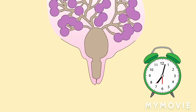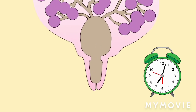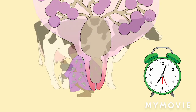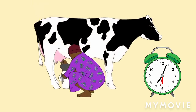The cow eats and relaxes, allowing milking. Higher-yielding cows may need more work to complete the milking process in seven minutes. Regular routine is important.